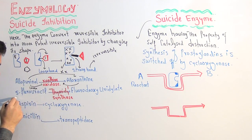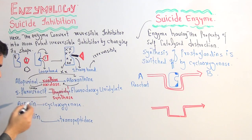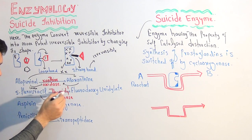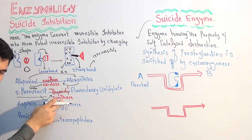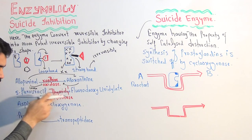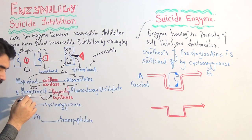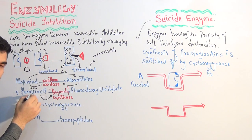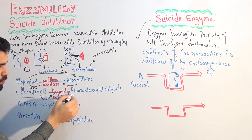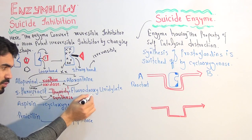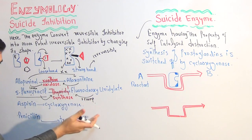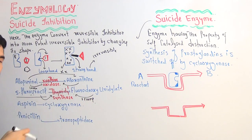Another example is 5-fluorouracil, which is an anti-cancer drug. It attaches with the enzyme thymidyl synthase to block it. In the beginning the attachment is reversible, but after some time the same enzyme changes the shape of 5-fluorouracil so that it becomes fluorodeoxyuridylate, which then makes a strong covalent bond with the enzyme. This is another example of suicide inhibition. Other examples include aspirin with cyclooxygenase — aspirin is a common drug used for headache.